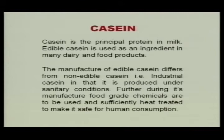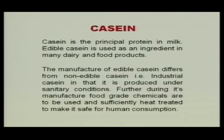Edible casein is used as an ingredient in many dairy and food products. The manufacture of edible casein differs from non-edible or industrial casein in that it is produced under sanitary conditions. During its manufacture, food grade chemicals are used and sufficient heat treatment is given to the milk to make it safe for human consumption.